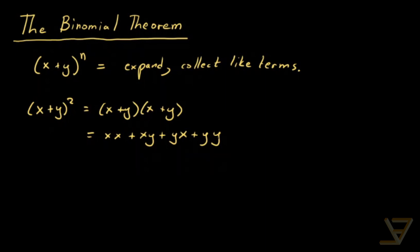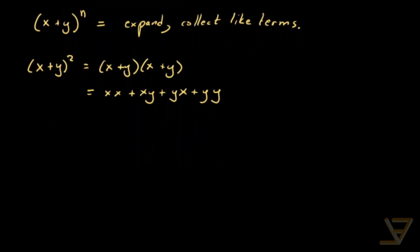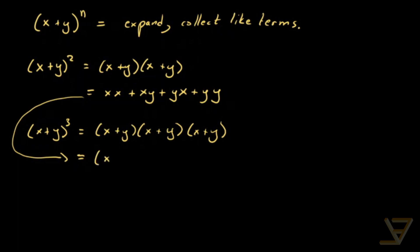There's a pattern that's already starting to emerge, and I'll point it out in just a second. But before that, let's do the expansion for n equals 3. We have x plus y to the power of 3 is equal to x plus y times x plus y times x plus y. And we can use our result from just a moment ago here for the first two factors. So it's equal to xx plus xy plus yx plus yy times x plus y.